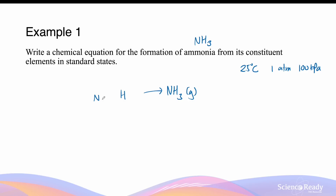So nitrogen in its standard state is N2 gas — diatomic, also a gas — and this is the equation. Now let's balance it. We have two nitrogens on the left-hand side and only one on the right-hand side, so we can add a 2 in front of the ammonia.